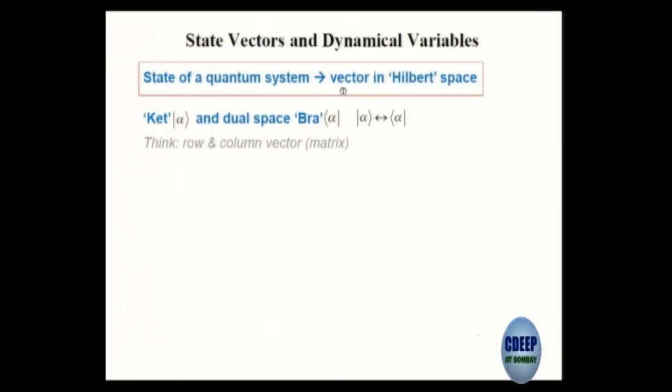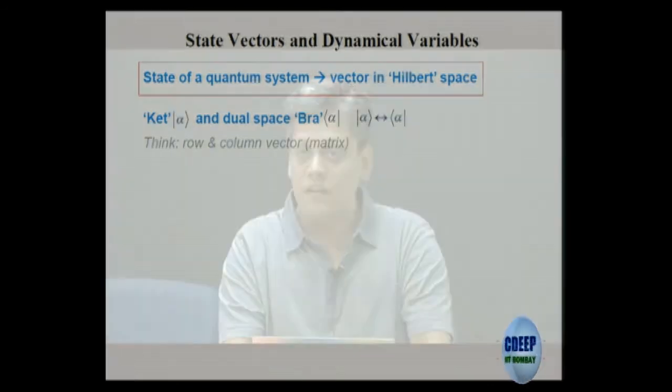If you think of any microscopic system — an atom, a molecule — that is what I am calling a quantum system here. Such a system is described and depicted as a vector in a Hilbert space. So I will explain what a Hilbert space is. You can think of it as a vector in 3D space like position or momentum, but this is somewhat more abstract than that.